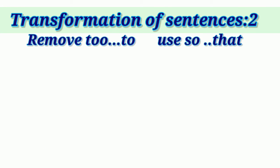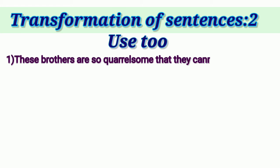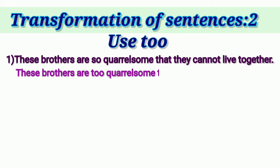Let us now take sentences where we do not remove TOO but instead use TOO. The changes are reverse: 'so' is replaced by TOO², and 'that + subject + cannot/could not' is replaced by TO². The first sentence is: 'These brothers are so quarrelsome that they cannot live together.' The answer is: 'These brothers are too quarrelsome to live together.'